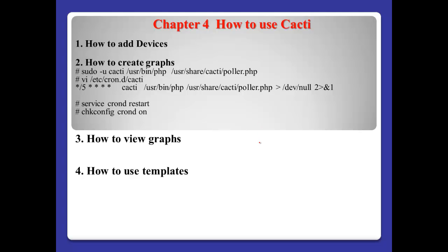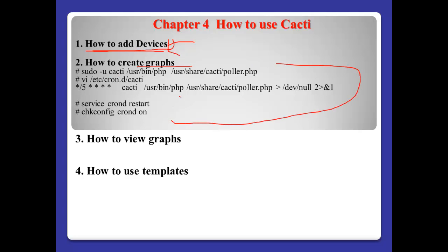How to use Cacti. Number 1: how to add devices such as router, switch, or server. And number 2: how to create a graph. Even if we are successful to add the devices, the first time we cannot see the graph. So if we want to see the graph for each data from each device we already configured, we need to use a specific command.